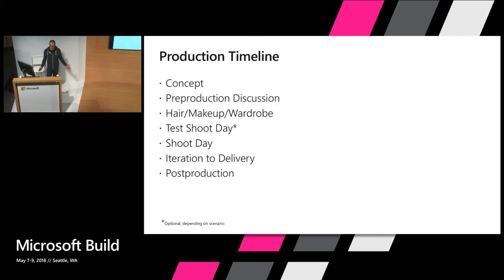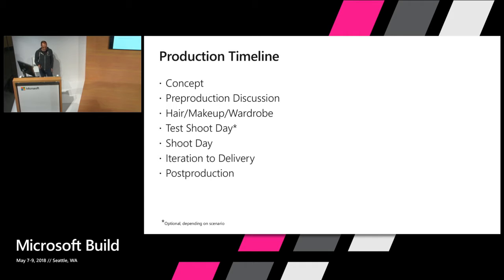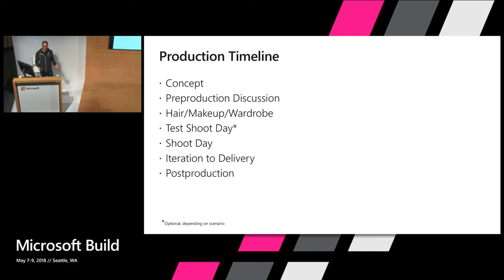So it's time to create a hologram. What does that production timeline actually look like? We start with the concept, then our stages work through pre-production discussions to turn that concept into a hologram and plan out the rest of the production schedule. We cover issues like hair, makeup, and wardrobe because flyaways and wispy hair do not capture very well as a hologram. Reflective makeup and wispy loose clothing also don't really work, so we work closely with our clients to make sure they're capturing something that makes sense.